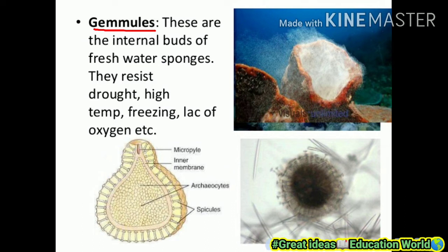Gemmules are the internal buds of freshwater sponges. They can resist drought, high temperature, freezing, and lack of oxygen. Here is the structure of a gemmule — it contains spicules, a micropyle, inner membrane, and other structural components.